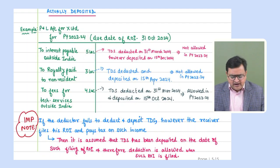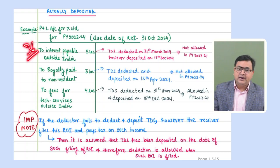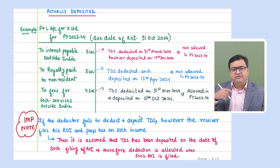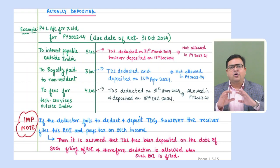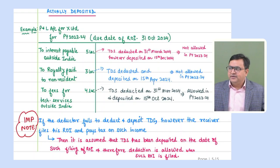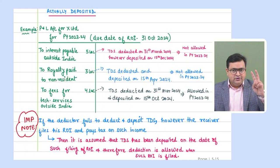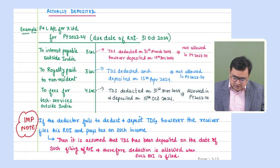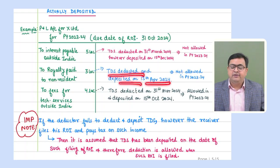Some students may ask: interest is allowed under Section 36, so why are we disallowing it? Because Section 40(a) overrides those sections — it starts with 'notwithstanding anything written in those sections.' If these conditions are not satisfied, we disallow. Second example: royalty paid outside India to a non-resident — ₹3 lakh. Two responsibilities: deduct during previous year, deposit up to due date of ROI. TDS is deducted and deposited on 15th April 2024.